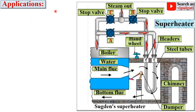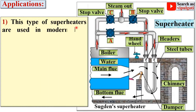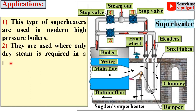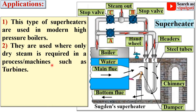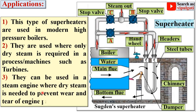Now, the application of the superheater. Superheaters are used in modern high-pressure boilers. They are used where only dry steam is required in a process or machines such as turbines. They can also be used in steam engines where dry steam is needed to prevent wear and tear of engine parts.